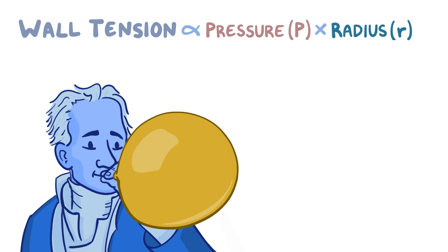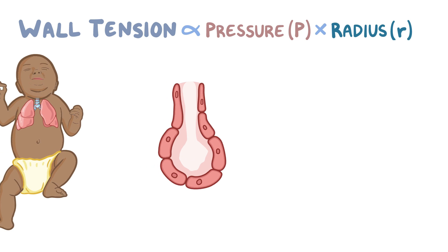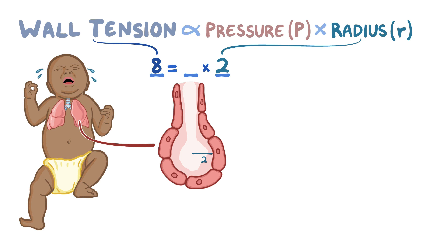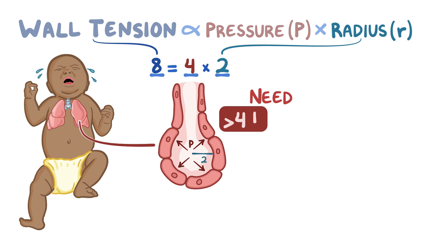An example of this can be seen in the alveoli in the lungs of a newborn. Using easy imaginary numbers and forgoing units: normally, an unused alveolus in a newborn is collapsed. Let's say it has a radius of 2 and the wall tension is 8. The baby starts crying and inhales, and the pressure of the inhaled air in the alveolus is 4. So our equation is 4 times 2, which gives us 8. Since this equals the wall tension, the alveolus doesn't expand — the baby needs to generate greater than 4 units of pressure to inflate it.